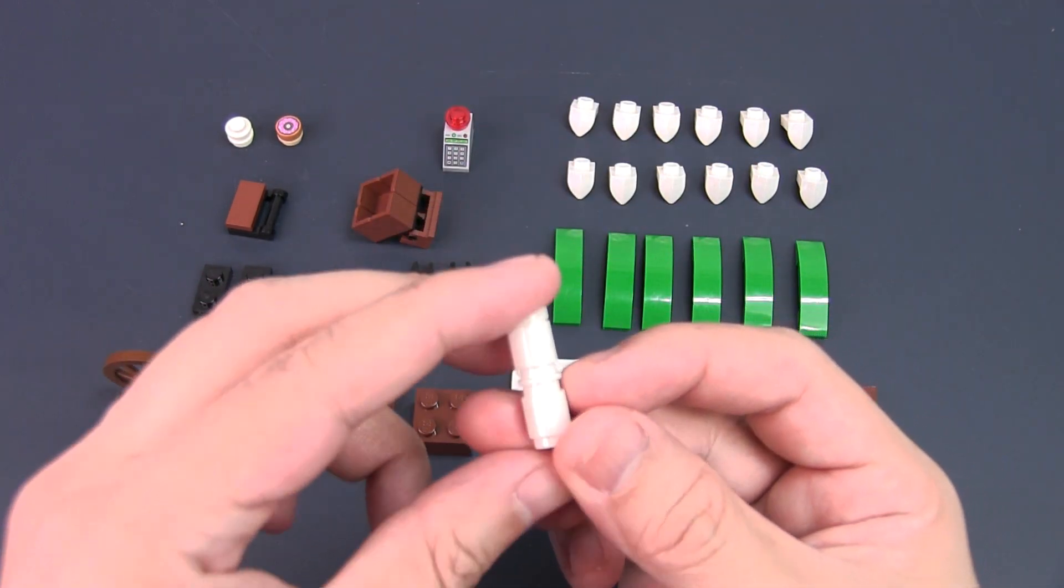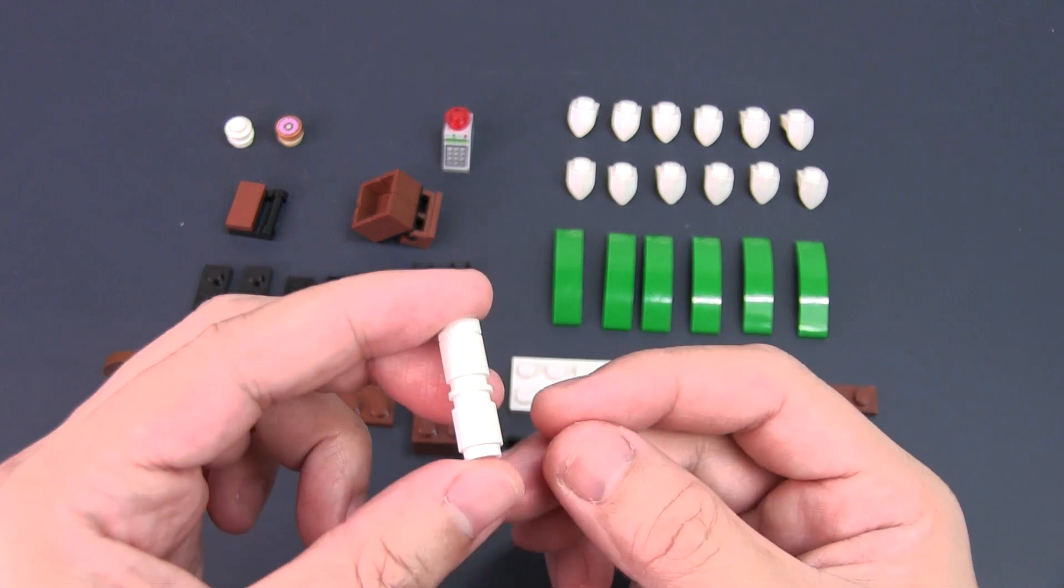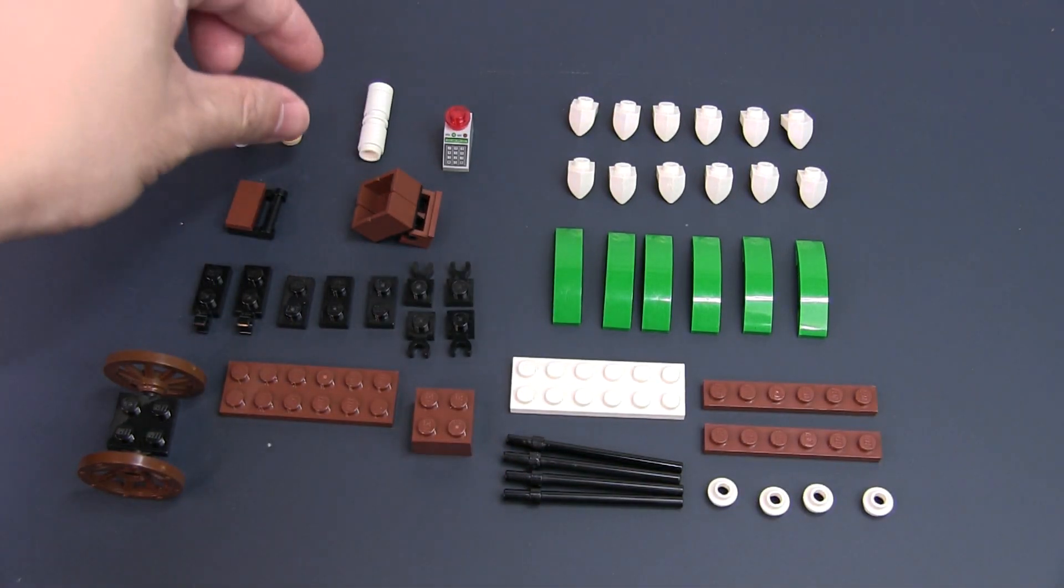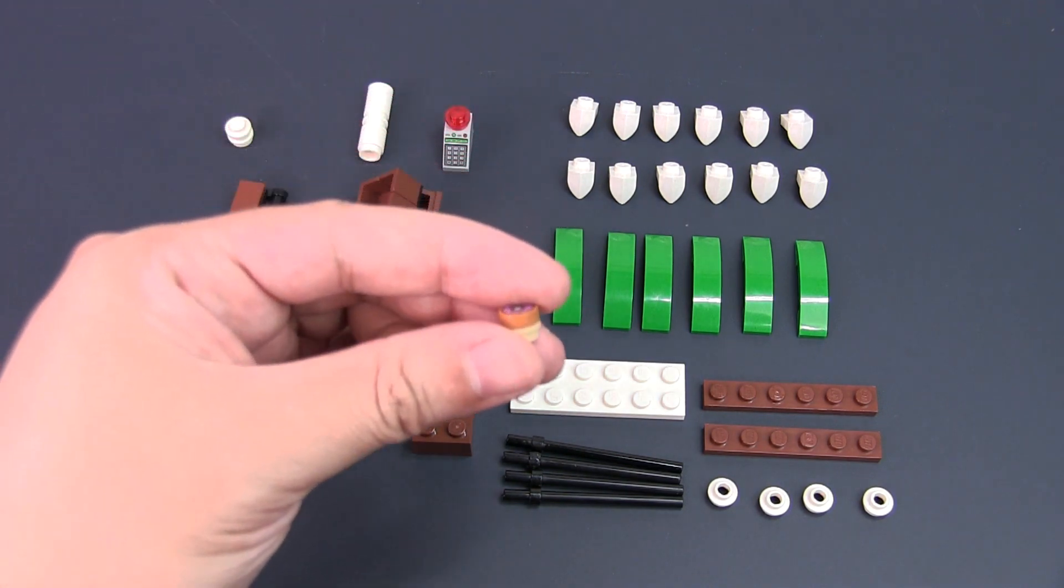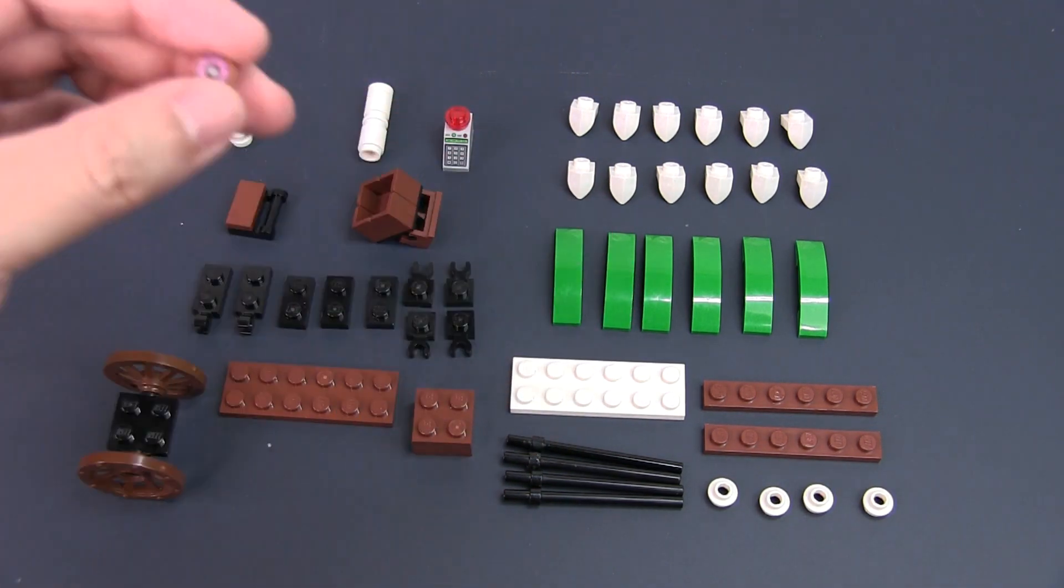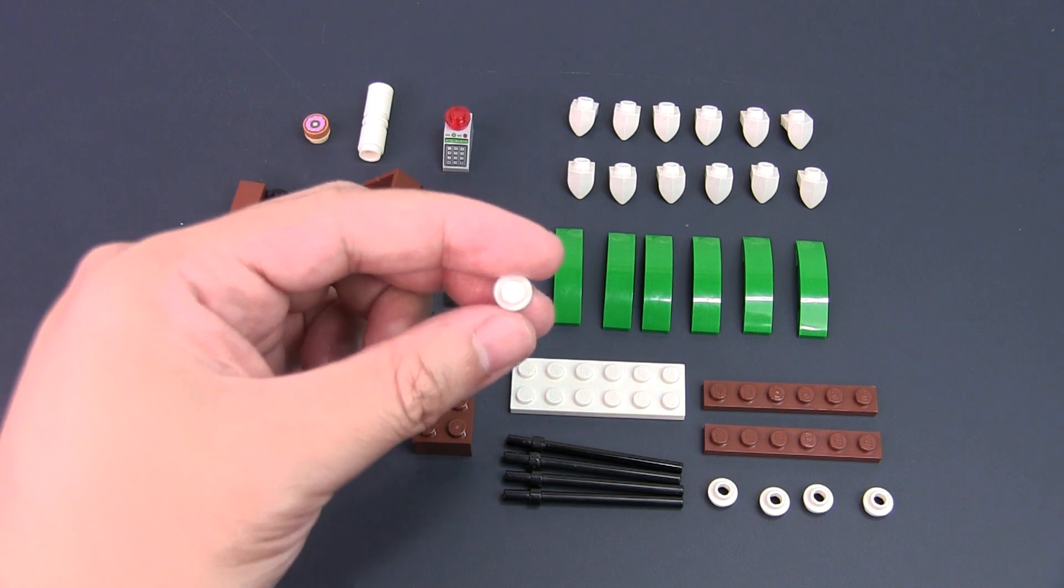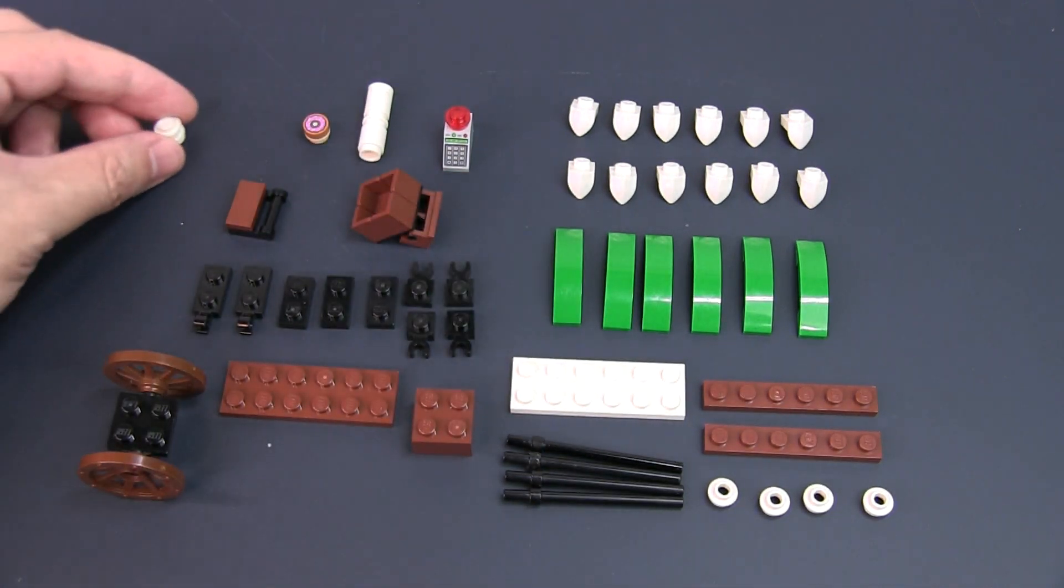Several white 1x1 round bricks with studs to act as a stack of paper cups, a brown stud with a printed doughnut piece to represent the pastry, and a few white studs stacked together to represent coffee cup lids.